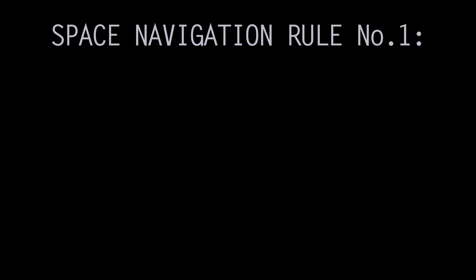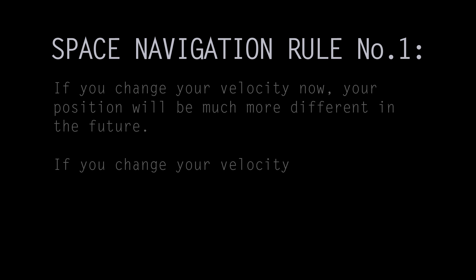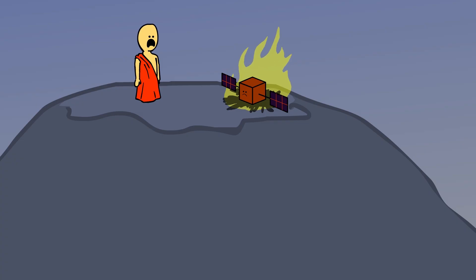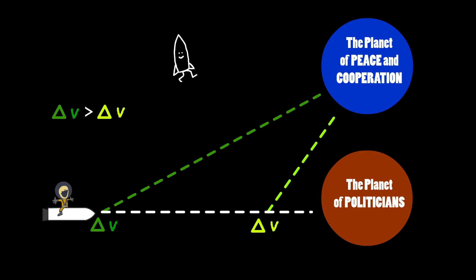Space navigation rule number one. If you change your velocity now, your position will be much more different in the future. If you change your velocity later, your position will not be as different. That's a life lesson and a physics fundamental. If you need to change direction to get to something in space, you can change direction with much less fuel the further you are from that object.